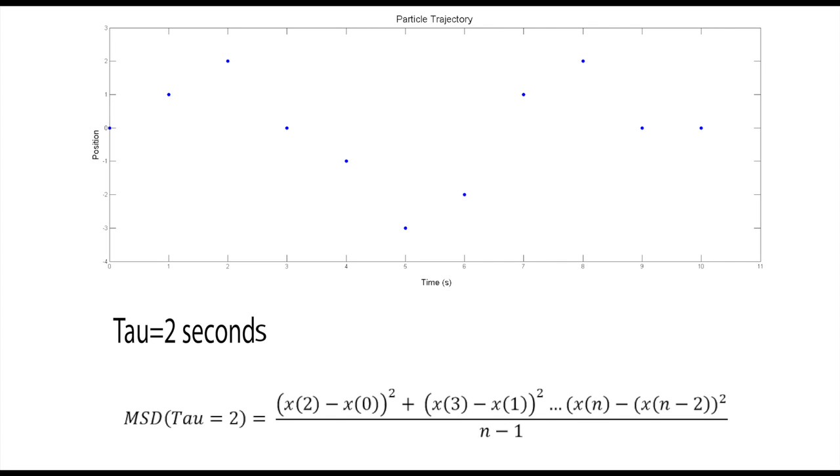Now we increment the tau value again. So this time we're going to use a tau value of two. So we're taking the points that are separated by two seconds. So here we're going to take the first pair, see how we're skipping one here, and then continuing this until we get the full data set. So now we've done the tau value of two.